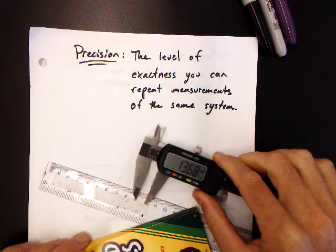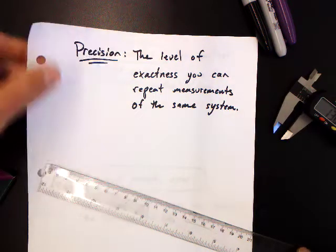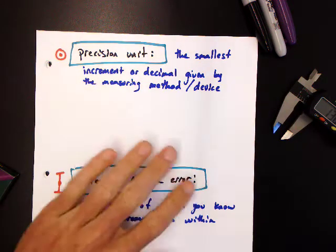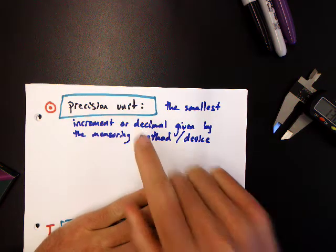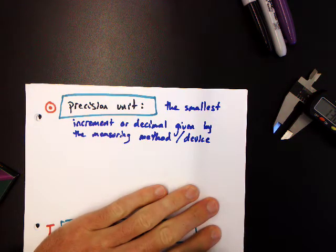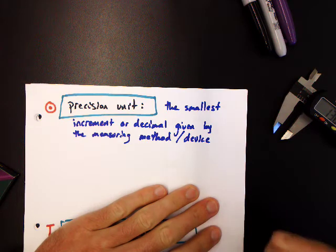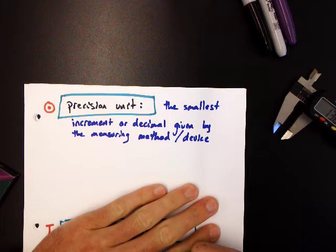We're going to break that down in practice into two concepts. The first is the precision unit. This is the smallest increment or decimal that we can get from our measuring device or our method of measurement.